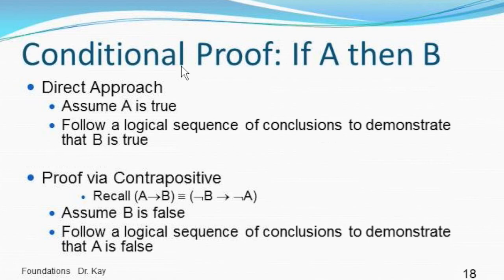Okay, another kind of proof is a conditional proof, if A then B. There are two typical approaches for this. Sometimes we use the direct approach, which is simply to assume A is true, right, if A is true. So assume A is true. And then follow a logical sequence of conclusions to demonstrate that if you assume that A is true, B has to be true as well. There's also a very common technique to use proof via contrapositive. So this is kind of like following a maze or solving a maze by starting it backwards. Remember that if A then B is exactly the same, it's equivalent to not B implies not A. So if not B, then we know not A is true. So if you want to prove via contrapositive, you just start by assuming B is false, assume not B, and if you can follow a logical sequence of conclusions to prove that A is also false under those circumstances, then you've also proven if A then B.